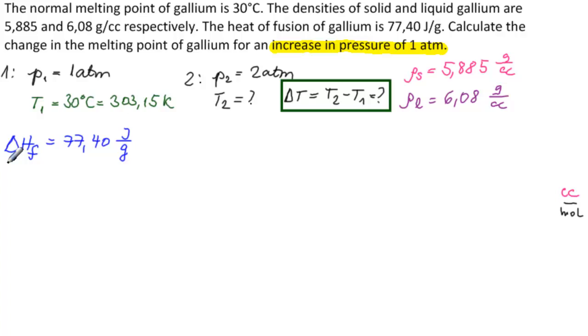This is molar enthalpy, molar heat of fusion. We're going to need to multiply this number times the molar weight of gallium. That would give us grams per mole, and the grams will cancel, leaving joules per mole, which is the correct units for delta H_F.